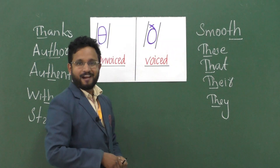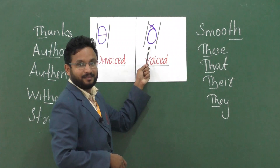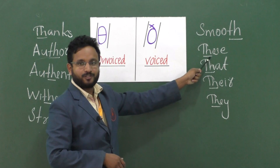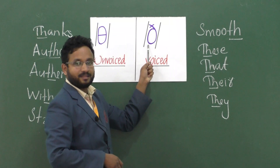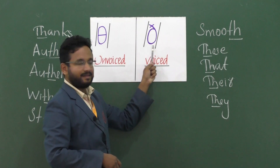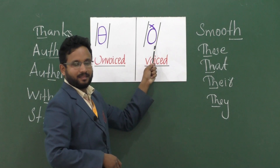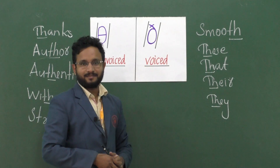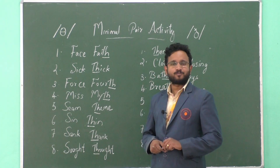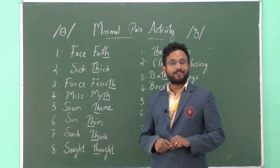So repeat after me: th — smooth, those, th — that, th — there. Okay, dear students. Now let's play a small game. Its name is the minimal pair activity.